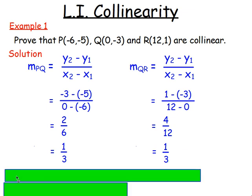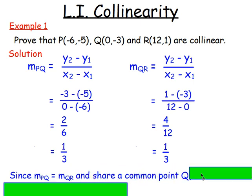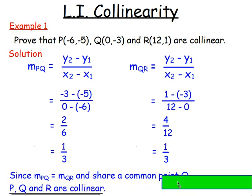So doing that, you can say that the gradient of PQ is equal to the gradient of QR. And you've also got to say that they share a common point. That point Q is common. Therefore, they would be collinear.